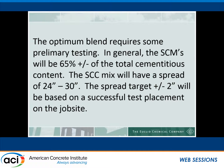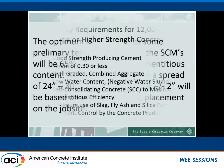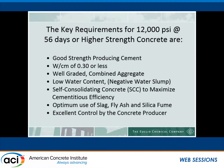Key requirements for 12,000 PSI at 56 days include a good strength-producing cement, low water-cement ratio of 0.3 or less, well-graded combined aggregate, low water content, and negative water slump. The negative slump concept comes from PCI requirements, where they start at zero slump and by reducing water further, calculate a negative slump value — a field terminology that lab personnel find unusual but is standard in practice.